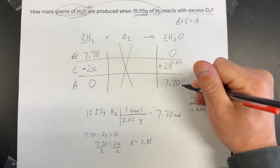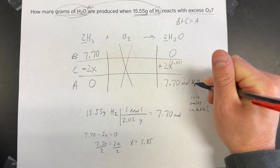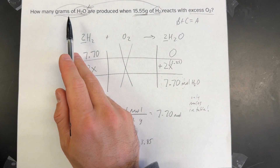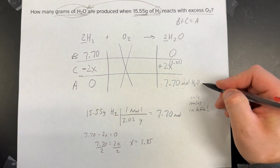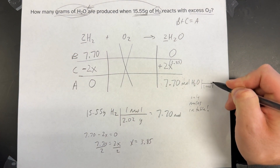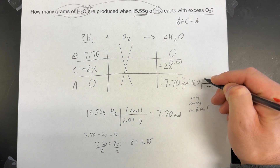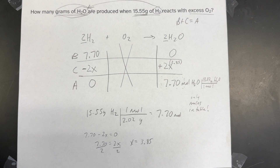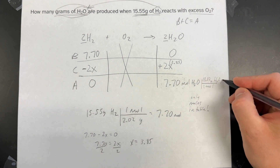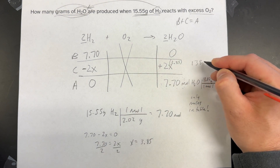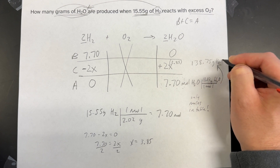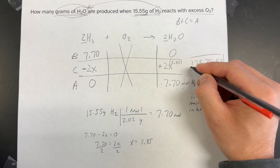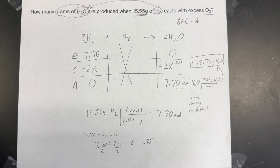This represents the moles of H2O after the reaction has completed. But the question wanted grams, so I take these moles and convert them to grams by multiplying by the molar mass of H2O, giving an answer of 138.75 grams of H2O. That is how many grams of H2O are produced starting with 15.55 grams of H2.